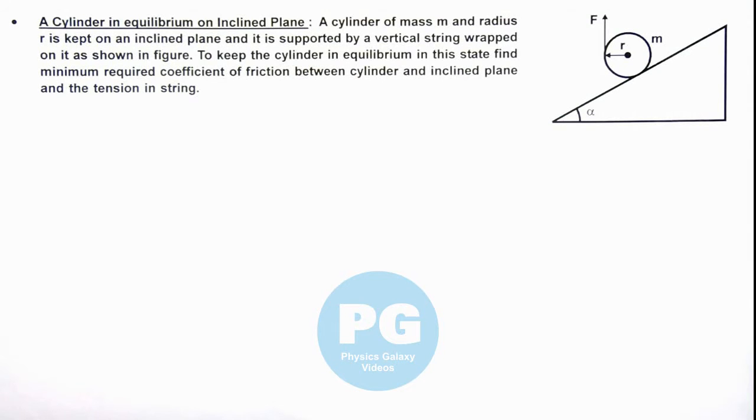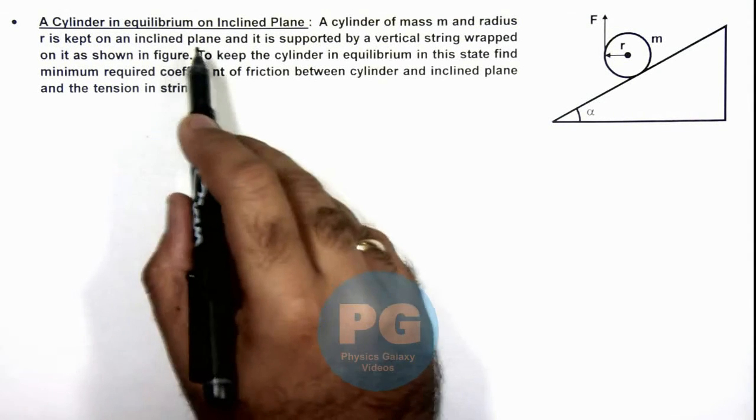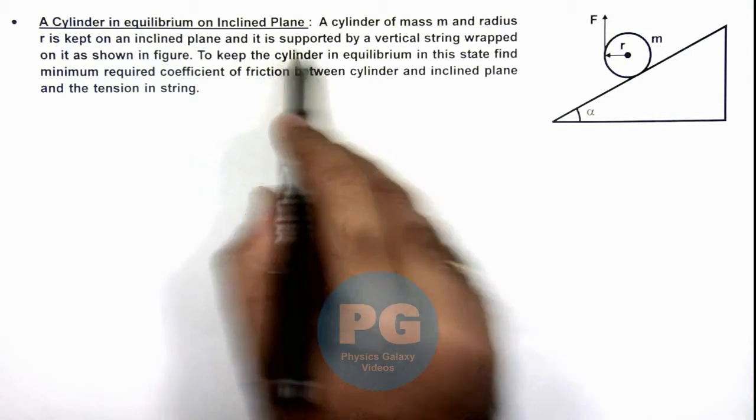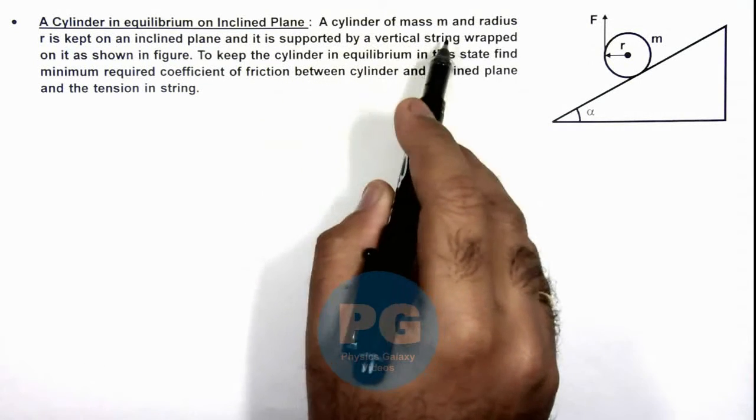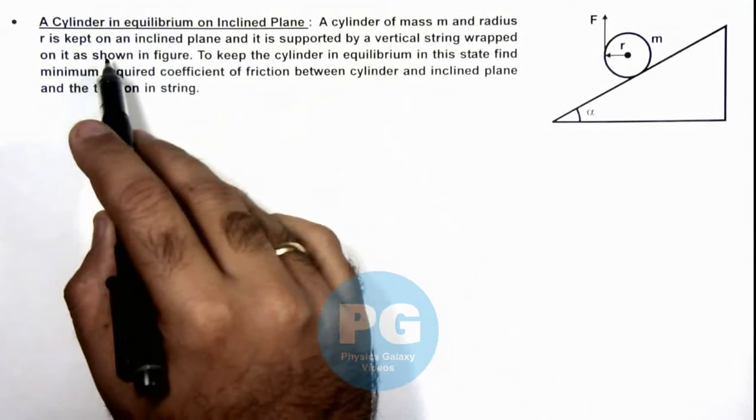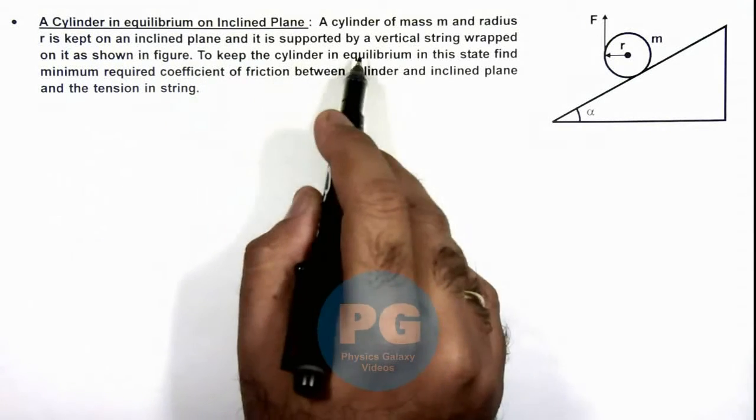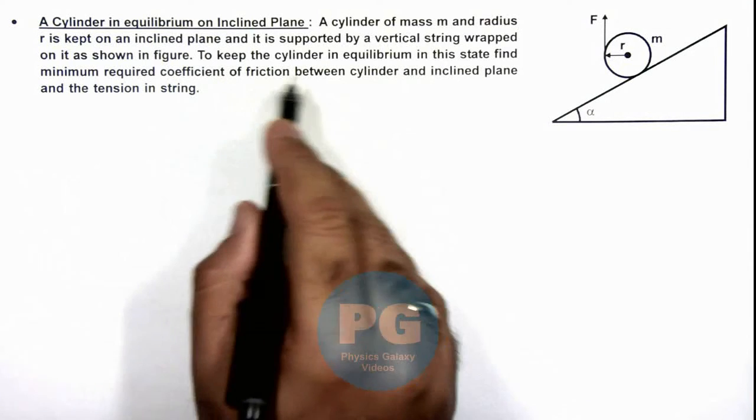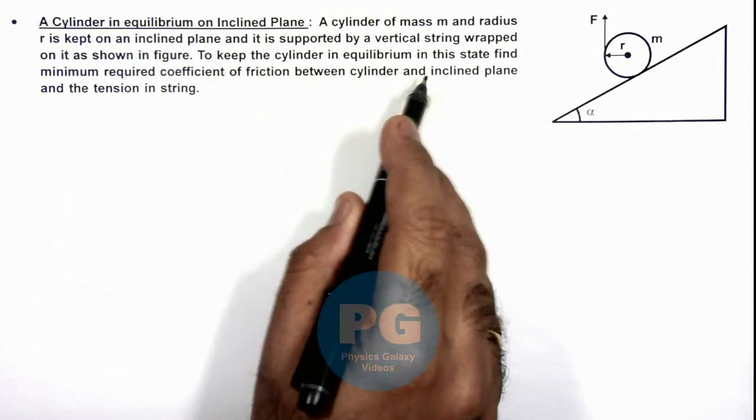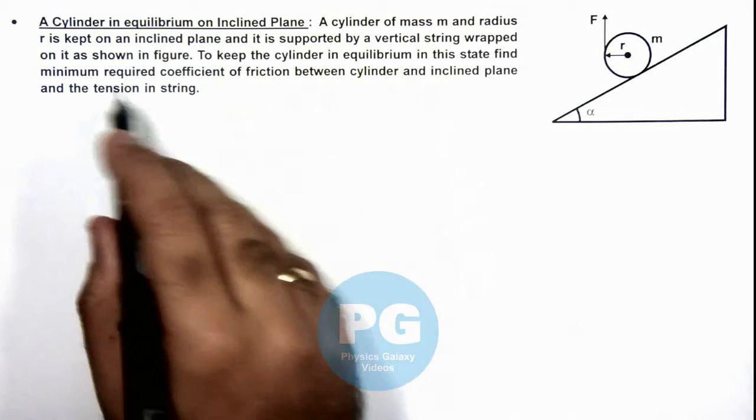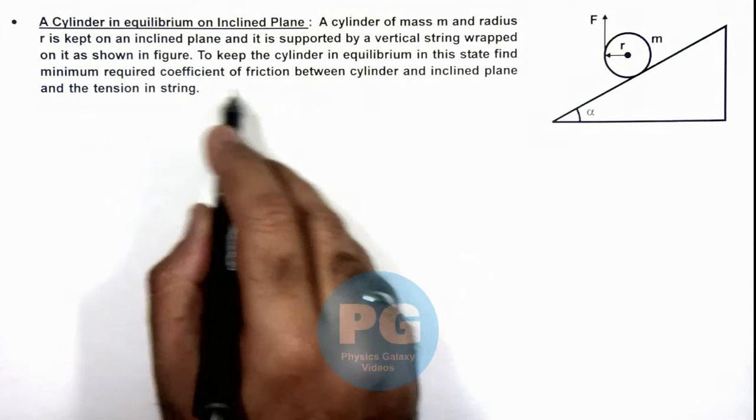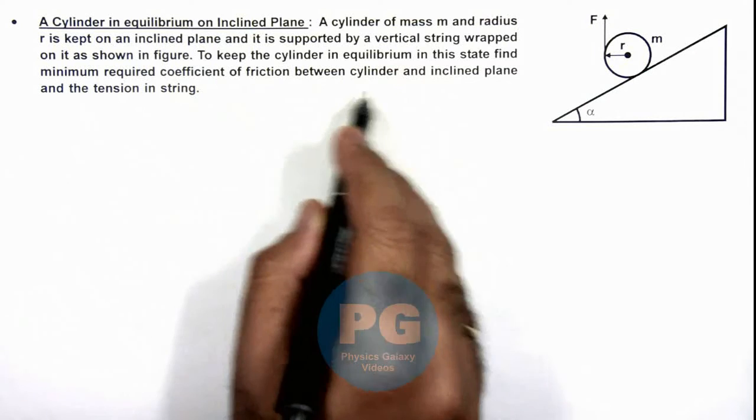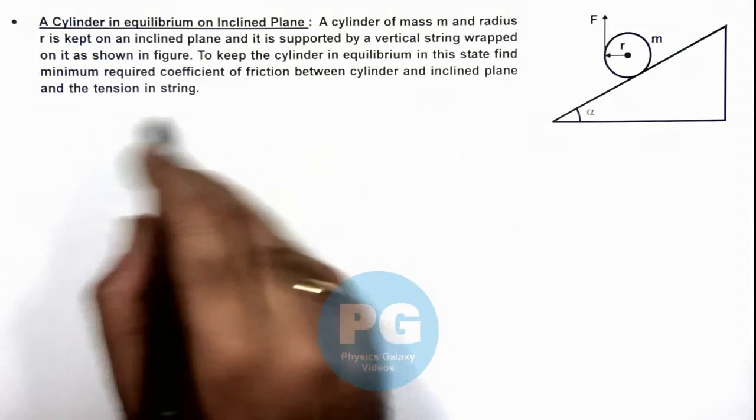In this illustration, we'll analyze a cylinder in equilibrium on an inclined plane. Here we are given that a cylinder of mass m and radius r is kept on an inclined plane and it is supported by a vertical string wrapped on it as shown in the figure. To keep the cylinder in equilibrium in this state, we are required to find the minimum required coefficient of friction between cylinder and inclined plane, and the tension in the string.